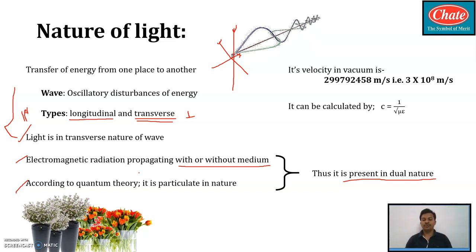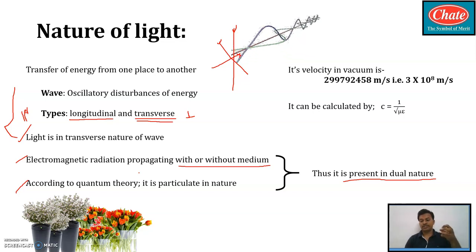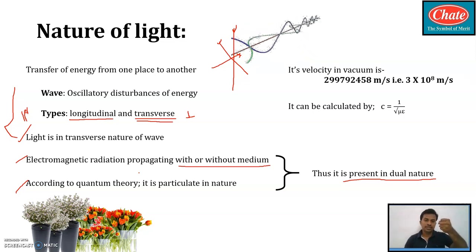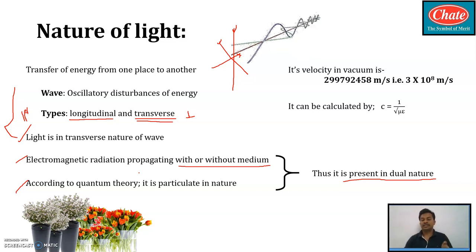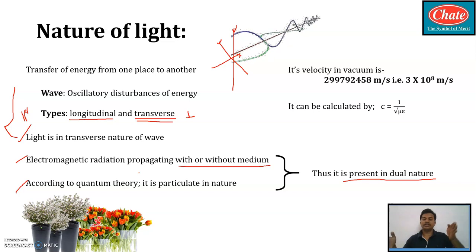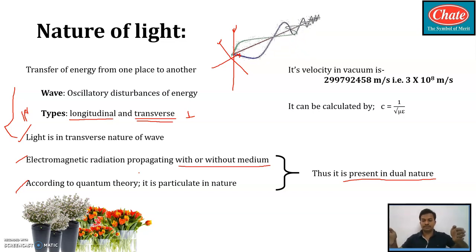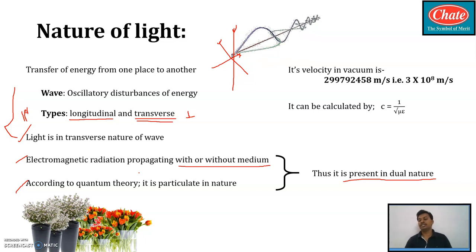According to quantum theory, light is nothing but it is manufactured from quanta. That means it must be a particle. That means light is both a wave and a particle — it is present in a dual nature.